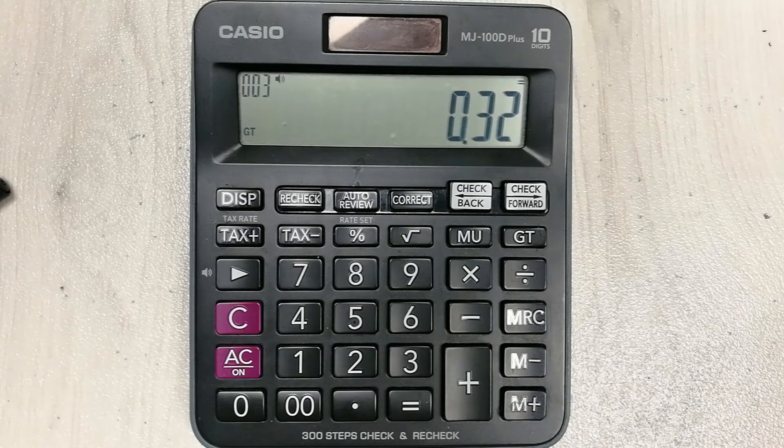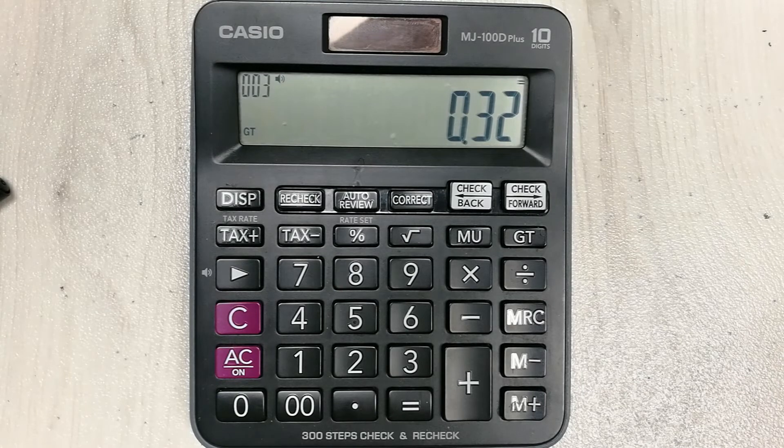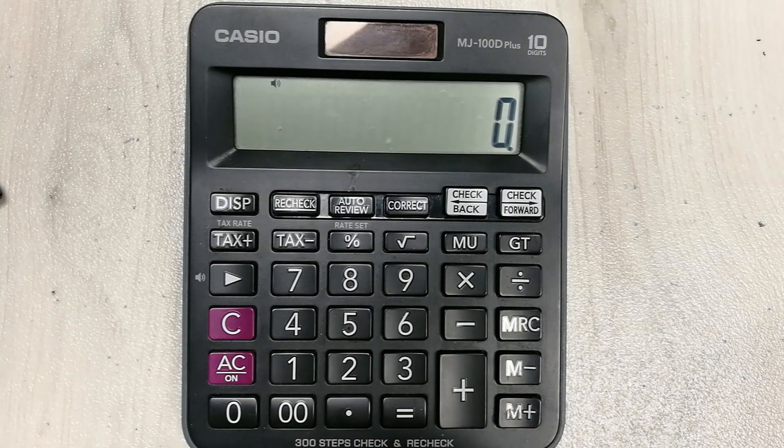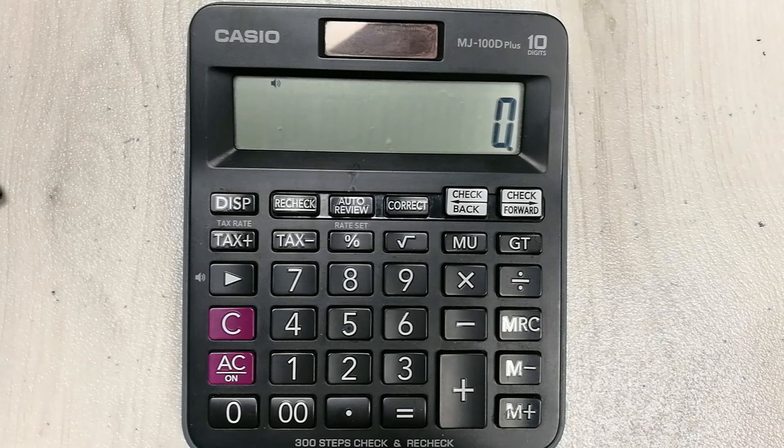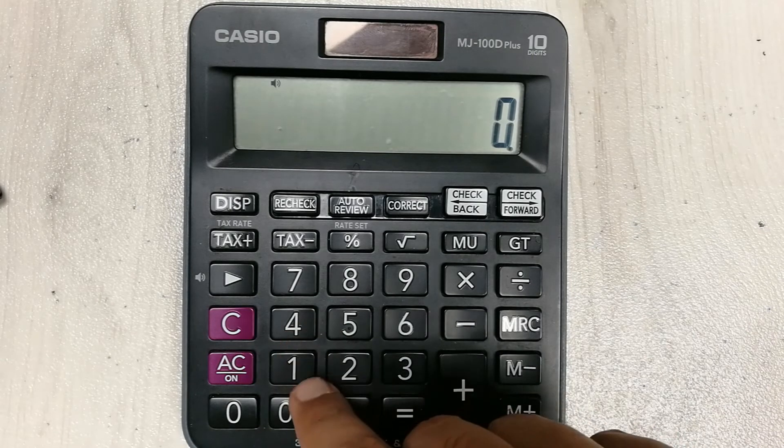So here is your answer. 32 percent is equal to 0.32. Let's move to another example with some complex percentage.